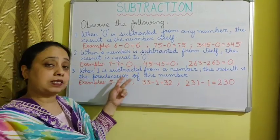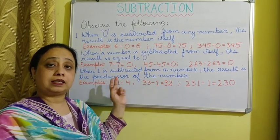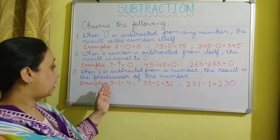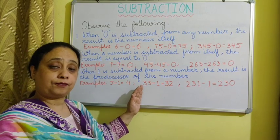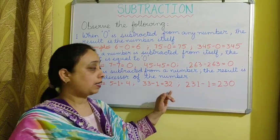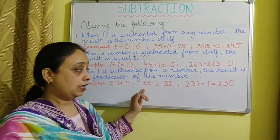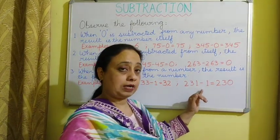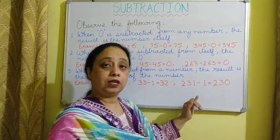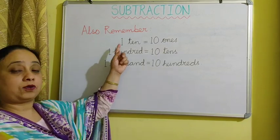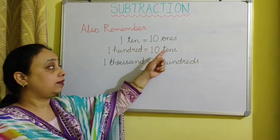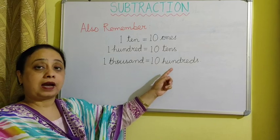The third point: when 1 is subtracted from any number, the result is the predecessor of that number. The predecessor is one number before. If we subtract 1 from 5, the answer is 4, and 4 is the predecessor of 5. If we subtract 1 from 33, the answer is 32. If we subtract 1 from 231, the answer is 230. You should also remember that 1 ten equals 10 ones, 100 equals 10 tens, and 1000 equals 10 hundreds.